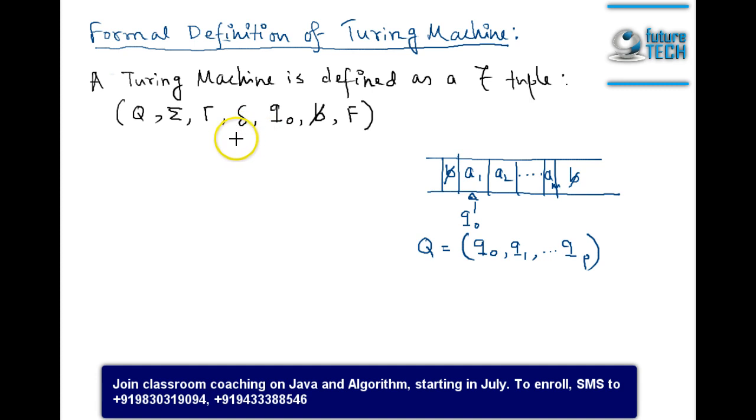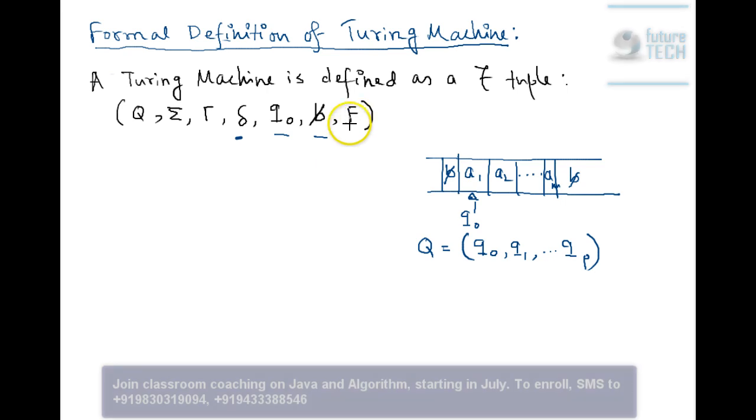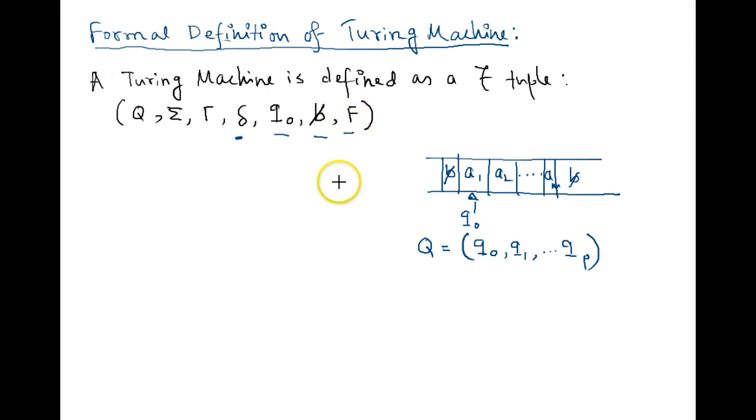delta is the transition function and q0 is the initial state from where the machine starts, b is denoted as blank space. If the cell does not contain anything in the tape, then we denote it using b and F is the set of final states.